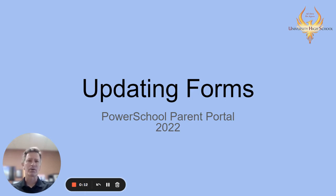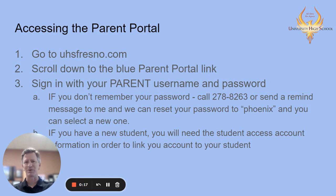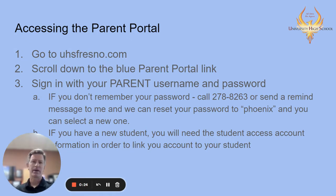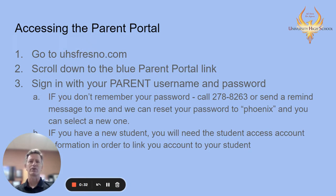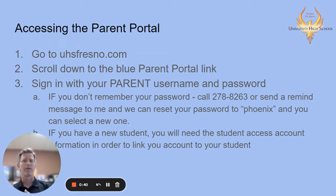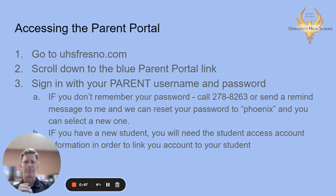This is going to help you access your parent portal and update the four forms that we need all students to have completed before we start the first day of school. The first thing you want to make sure you do is go to the uhsfresno.com website to access the parent portal. When you're on that website, if you scroll down quite a bit to the parent section, you'll find a blue square that says parent portal and that'll take you to the parent portal link. In that link you will then enter your username and your password. This is different from the student username and password — it's the same website but you have your unique parent username and parent password.